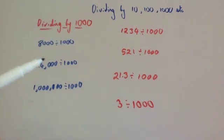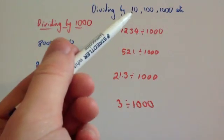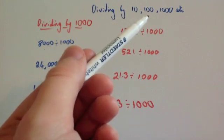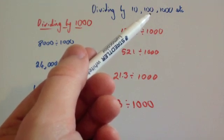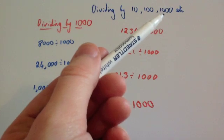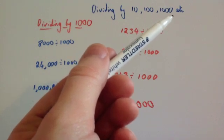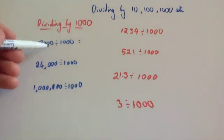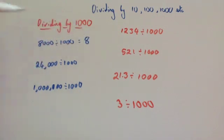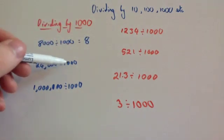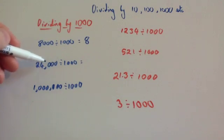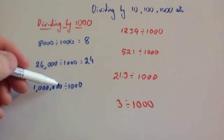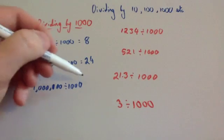So let's look at what happens whenever you divide by 1,000. Dividing by 10, you take off one zero or move the decimal point one place to the left. Dividing by 100, you take off two zeros or move the decimal place twice to the left. Dividing by 1,000, you either take off three zeros or move the decimal place three places to the left. So 8,000 divided by 1,000 — take off three zeros, leaves you with 8. 24,000 divided by 1,000 — take off three zeros, leaves you with 24. 1,000,000 divided by 1,000 — take off three zeros, leaves you with 1,000.